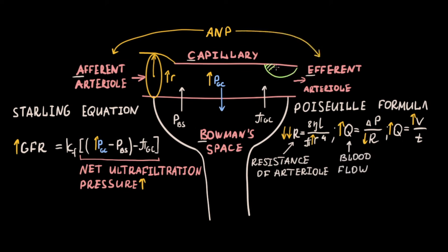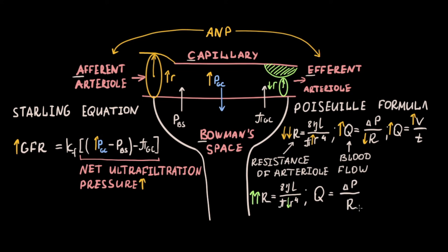ANP also stimulates constriction of the efferent renal arteriole, decreasing its radius and thus, by the Poiseuille formula, extremely increasing its resistance. According to the blood flow formula, high resistance decreases blood flow through the vessel, meaning less blood exits the capillary per unit time. Some blood is therefore restricted from leaving the capillary, increasing hydrostatic pressure inside it, raising net ultrafiltration pressure, and increasing glomerular filtration rate.